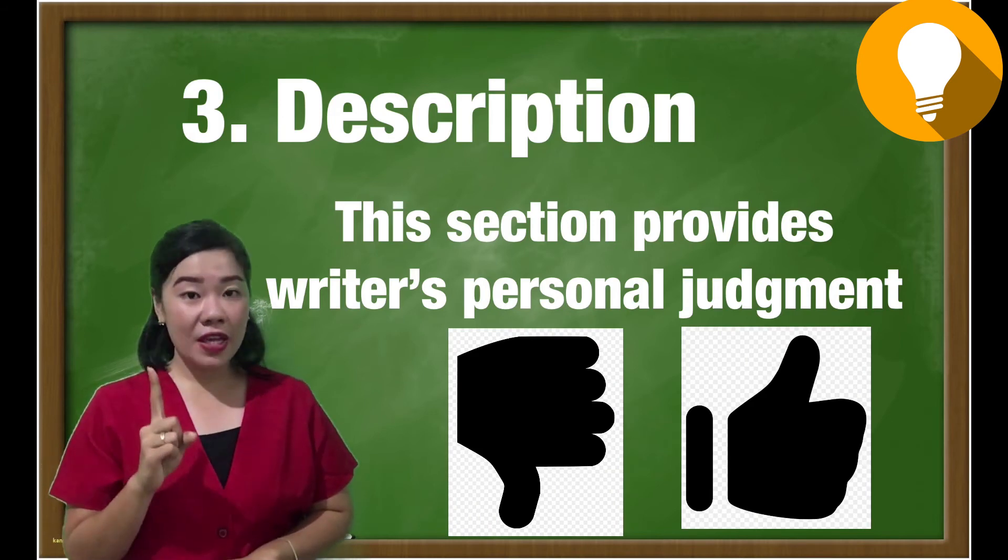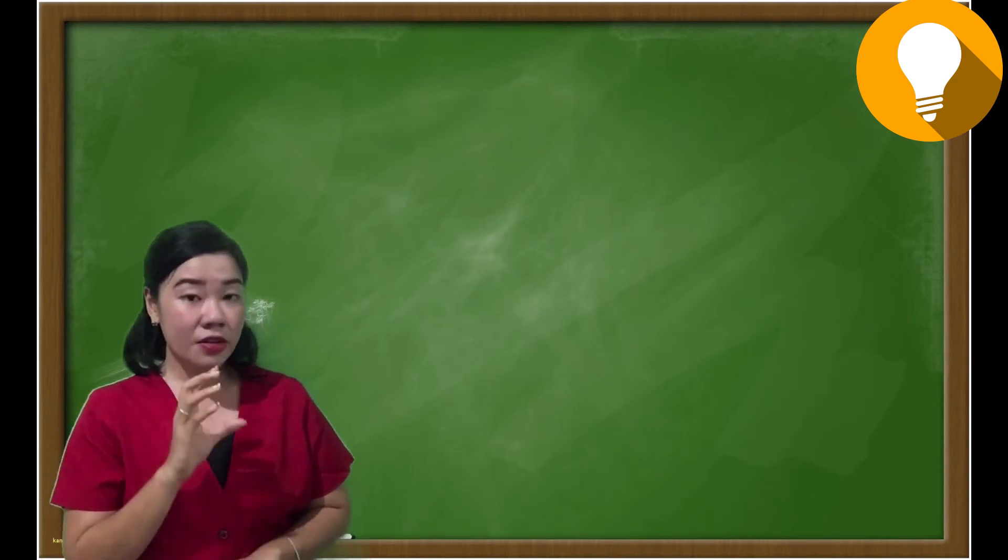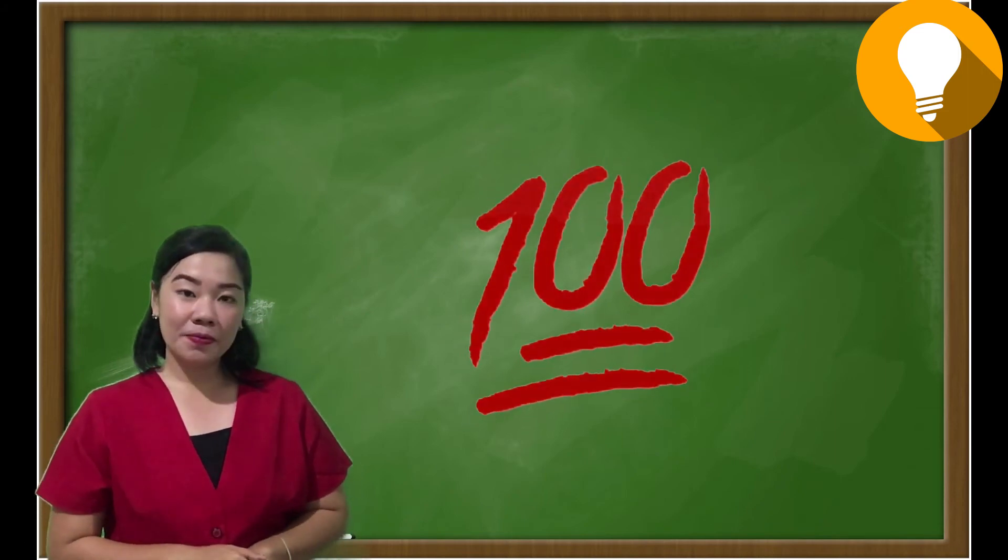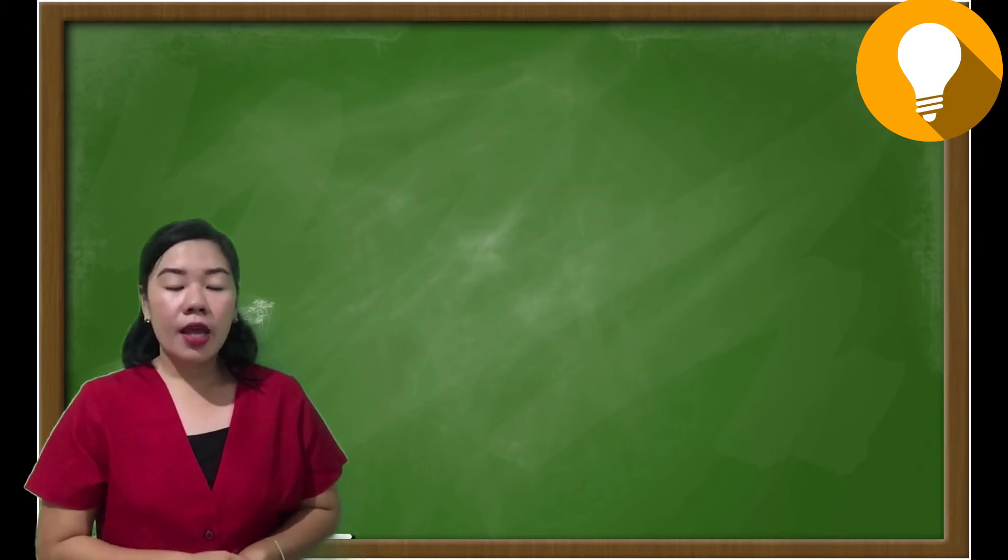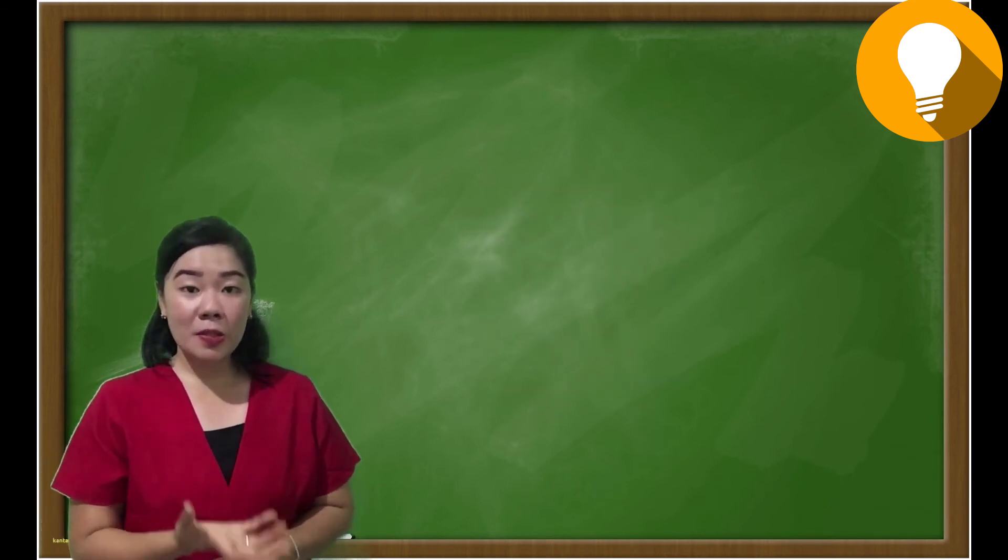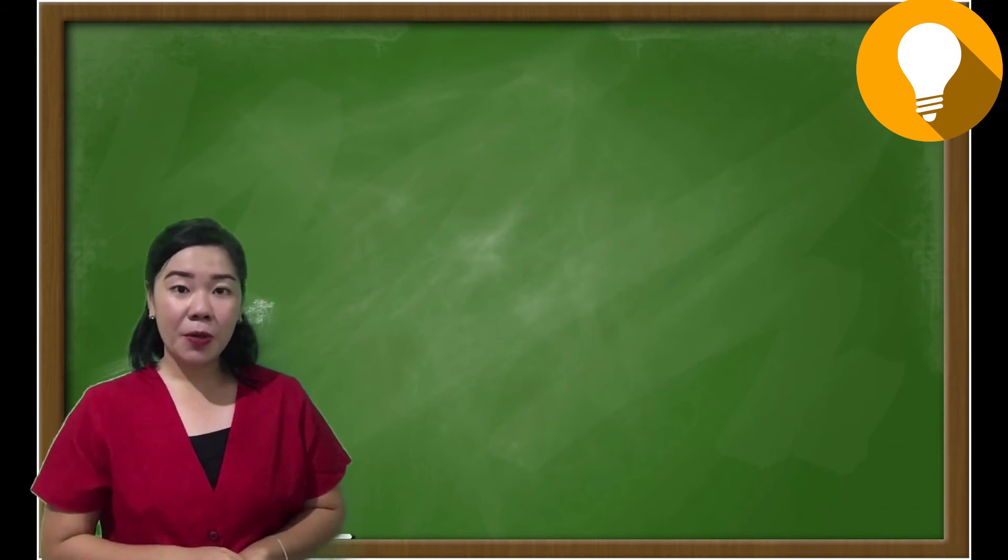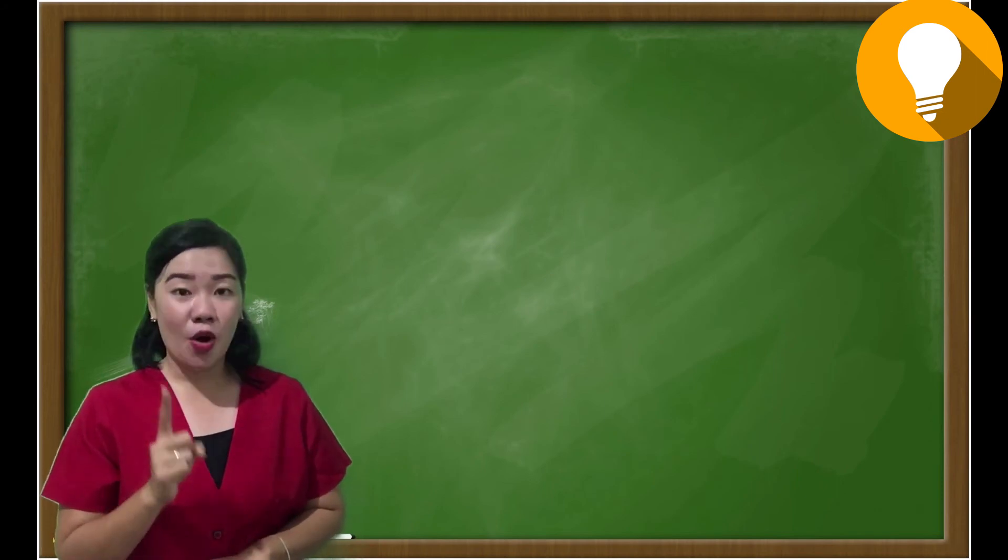The most important thing that you need to remember in writing this film review is that you need to be honest. You describe your own feelings, your own opinion, and you describe how was your experience in watching the film. You should be honest all the time.